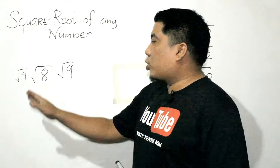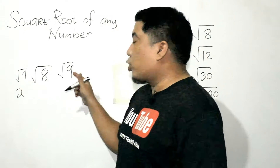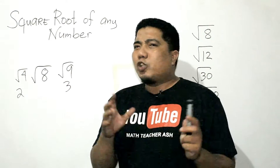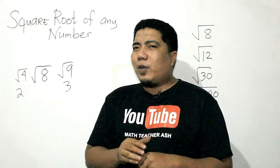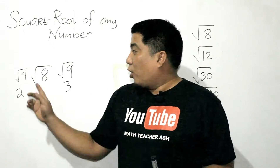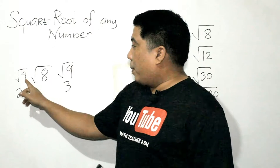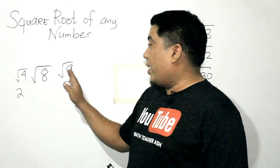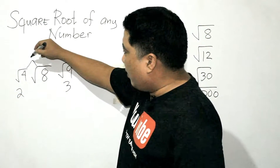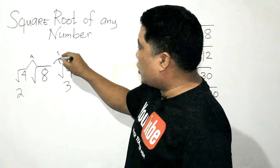Square root of 4 has a principal root of 2, and square root of 9 has a principal root of 3. Now, what you can do here is get the difference of these two pairs: the difference between 4 and 8 is 4, and the difference between 8 and 9 is 1.